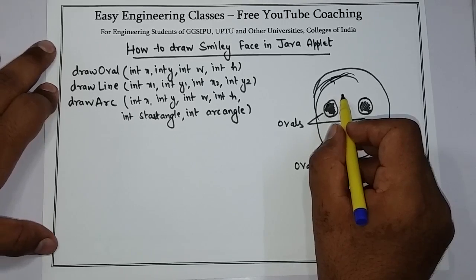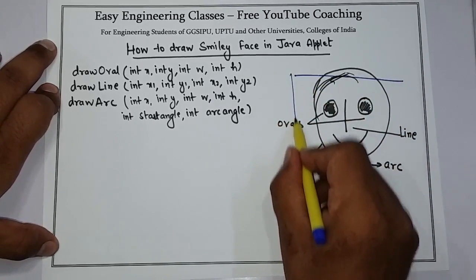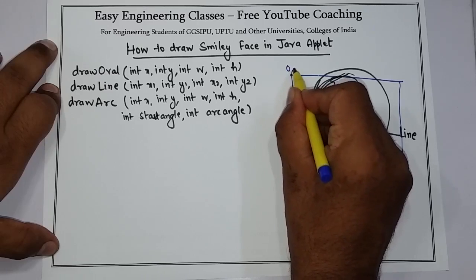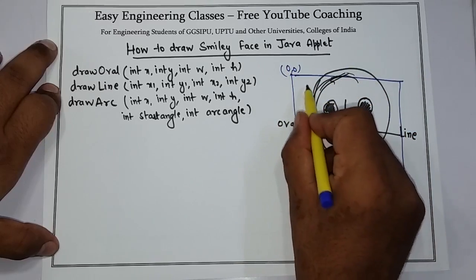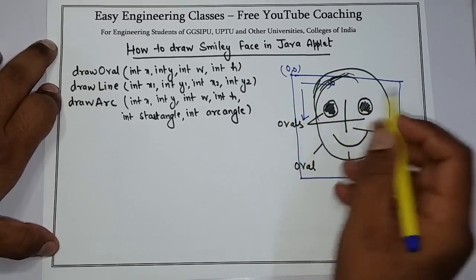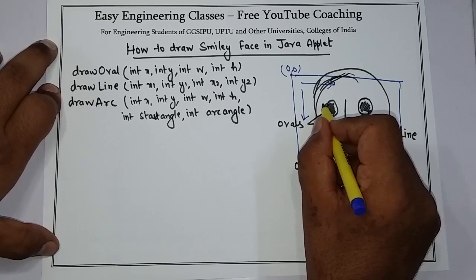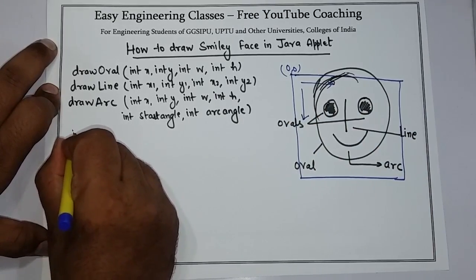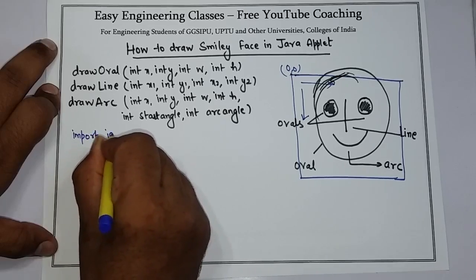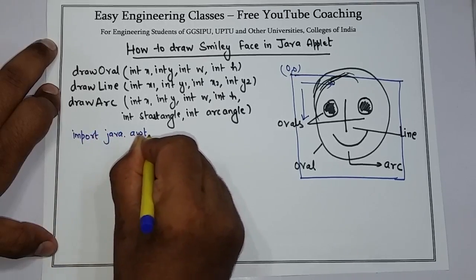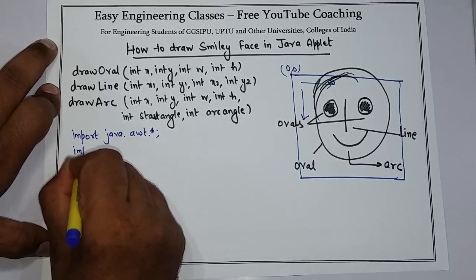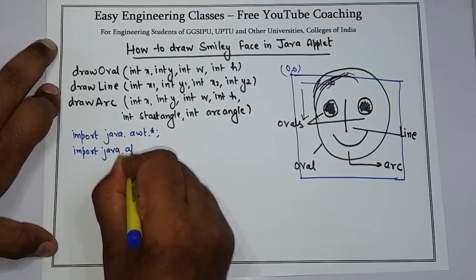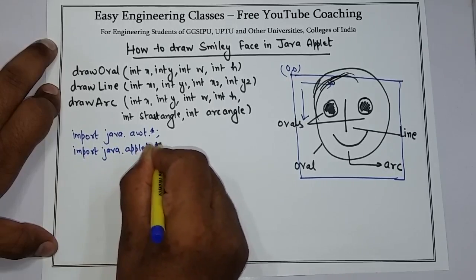Now we will write the complete code of Java Applet to draw a smiley face. You need to know the coordinates - you can assume that this is my window and the coordinates start from position (0, 0) and increase from there. You have to assume at which position your coordinate is starting. So you have to write: import java.awt.* then import java.applet.*